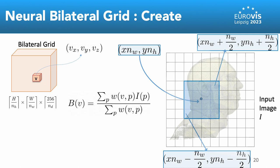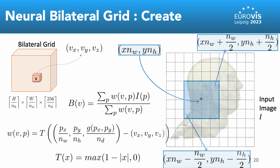The weights are computed based on the distance between the 3D voxel coordinate and the coordinate formed by the pixel coordinate and the guide image intensity at that pixel. A tent filter T is applied to give more weightage to the pixels that are closer to the voxel coordinates.